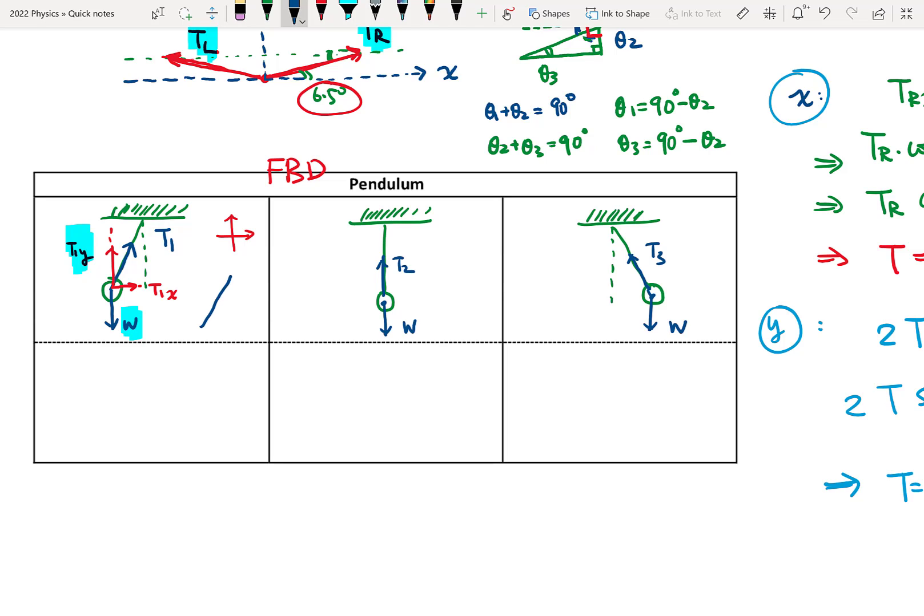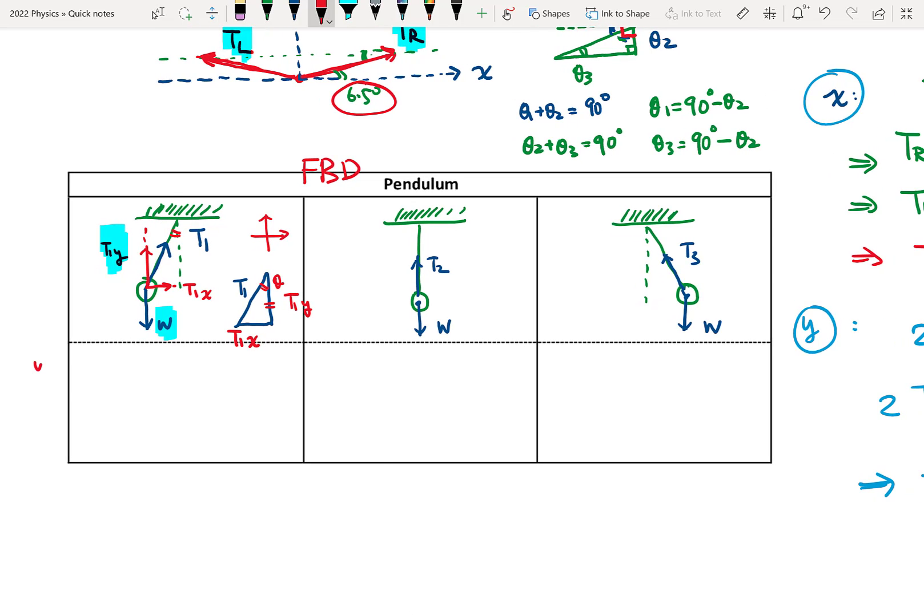Now I draw a triangle to find the components, so T1X is how much? So if this is the angle theta and this will be opposite, so T1X will be sine theta and T1Y will be T1 cosine theta.